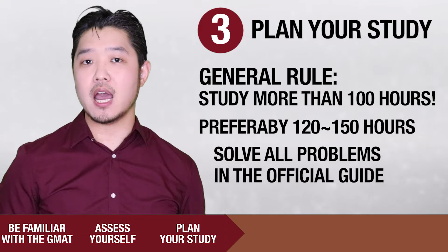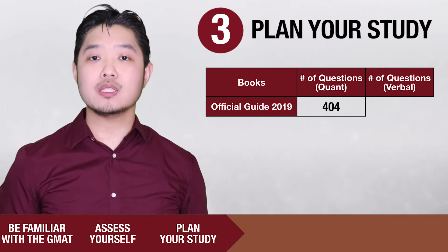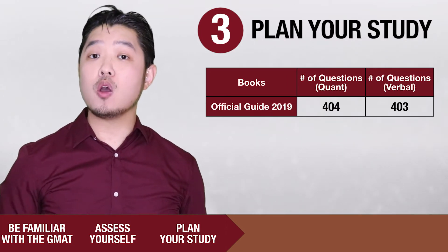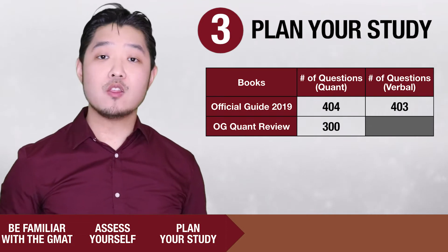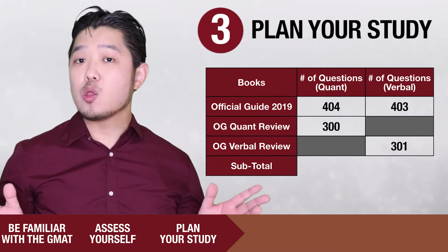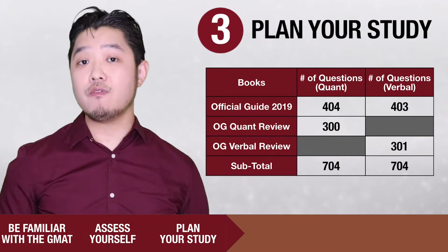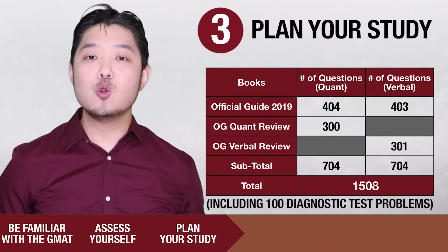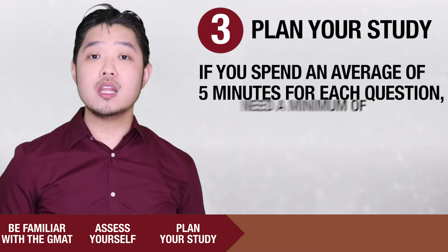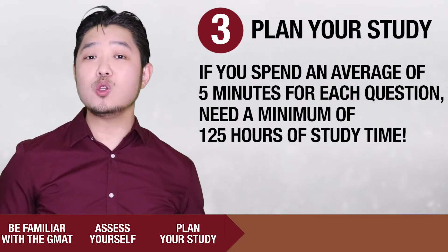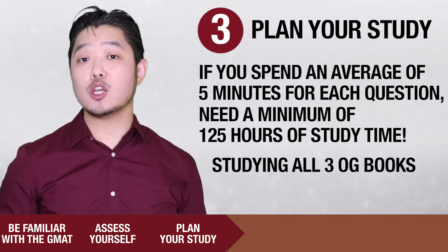Solve all problems in the Official Guide — do all 3 books of the GMAT Official Guide series. In total, there are 404 quantitative questions in the Official Guide 2019 and 403 verbal questions. The OG Quant Review has 300 quant questions and the Verbal Review has 301 questions. In whole, you have 704 quant questions and 704 verbal questions across all official guide books — that's 1,408 questions including the diagnostic test. If you spend an average of 5 minutes per question, you will need a minimum of 125 hours of study time. You can see that studying all 3 official guides consumes a lot of time.